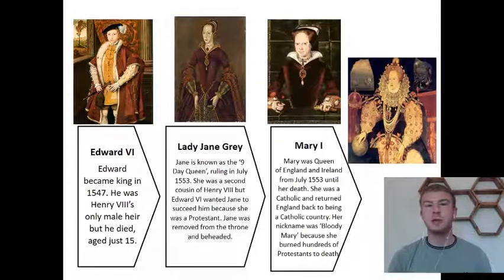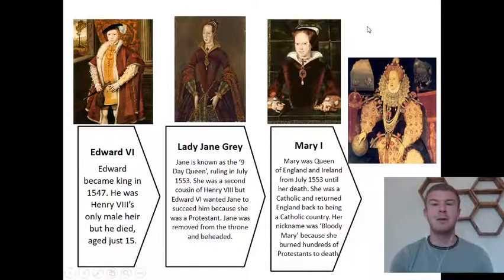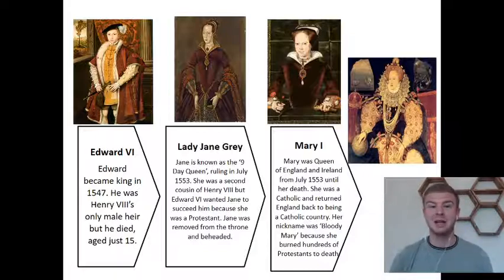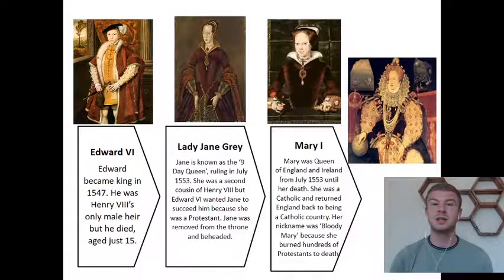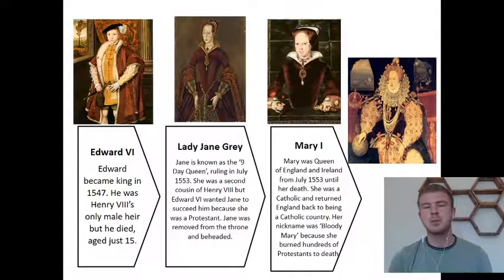Unfortunately, some people in England were very unhappy that Lady Jane Grey had been put forward as queen. She was put in prison and then beheaded. That opened the door for Mary I, often known as Bloody Mary, who became queen in 1553. She was a Catholic — exactly what Edward VI had feared. One of the things she did was persecute Protestants, meaning she treated people badly because of their beliefs. They would even be burned at the stake for being Protestant, and it is thought that she burned hundreds of Protestants to death.